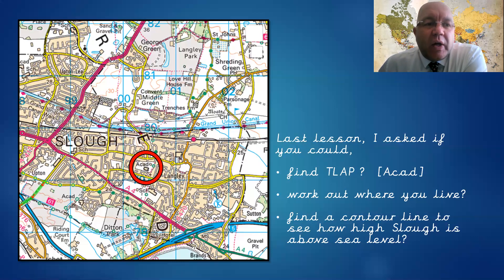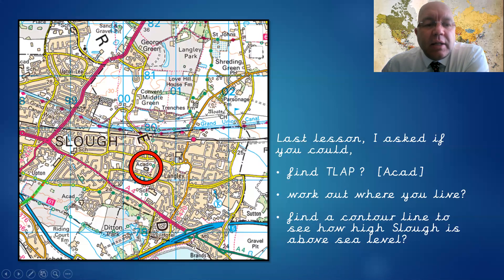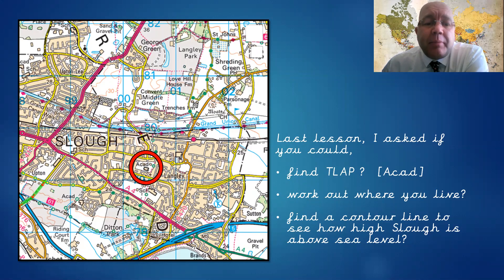The second question was: could you work out where you live? Obviously I can't help with that one — I don't know all your addresses. But now you know where school is, think about your walk home or your ride home in the car. This yellow line here is Langley Road. There's the little roundabout, the music college or performing arts college just on that roundabout, and the row of shops along here. Now you know where school is, can you work out where you live? Maybe you travel further and you're not actually on this map, but if you are, see if you can find yourself.